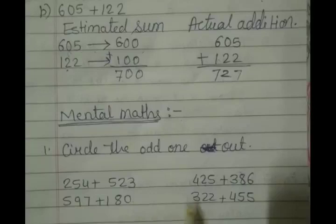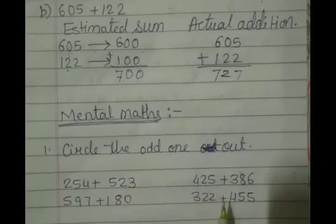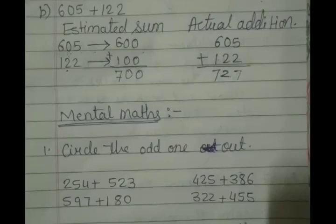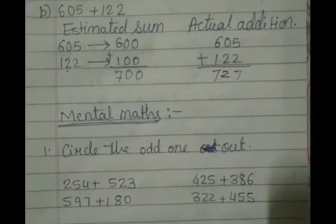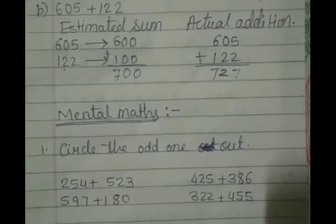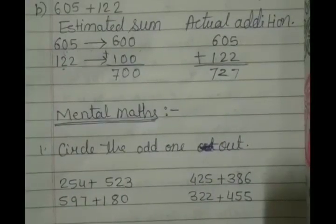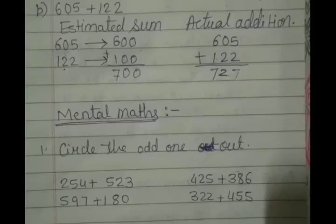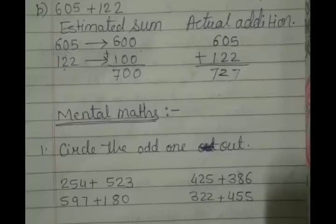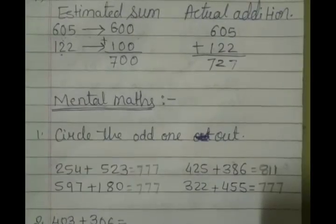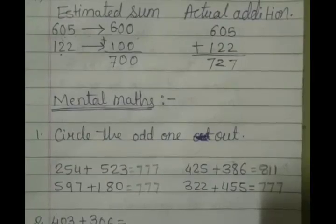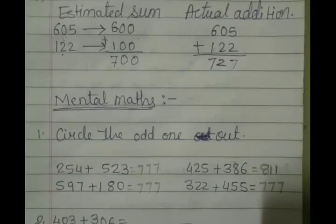Children, to find out which one is the odd one, we need to add all the given problems. Here are the two numbers. We need to add them. We need to find their answer. And then we will consider which one is the odd one. So let's add them. Everyone will try to get the answer. Start adding the given numbers. Now here is our answer. We have got add the numbers given to us and we get the answer.